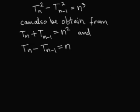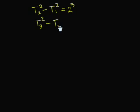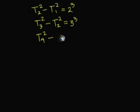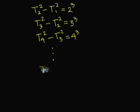Let us write the first few: t sub 2 squared minus t sub 1 squared is equal to 2 to the cube. t sub 3 squared minus t sub 2 squared is equal to 3 to the cube. t sub 4 squared minus t sub 3 squared is equal to 4 to the cube. The addition of the right-hand sides of these equalities is what we need. The left-hand side seems to be simplifying, canceling all terms but the first and the last — leaving t sub 4 squared minus t sub 1 squared. We can see we should be able to do this all the way to n.